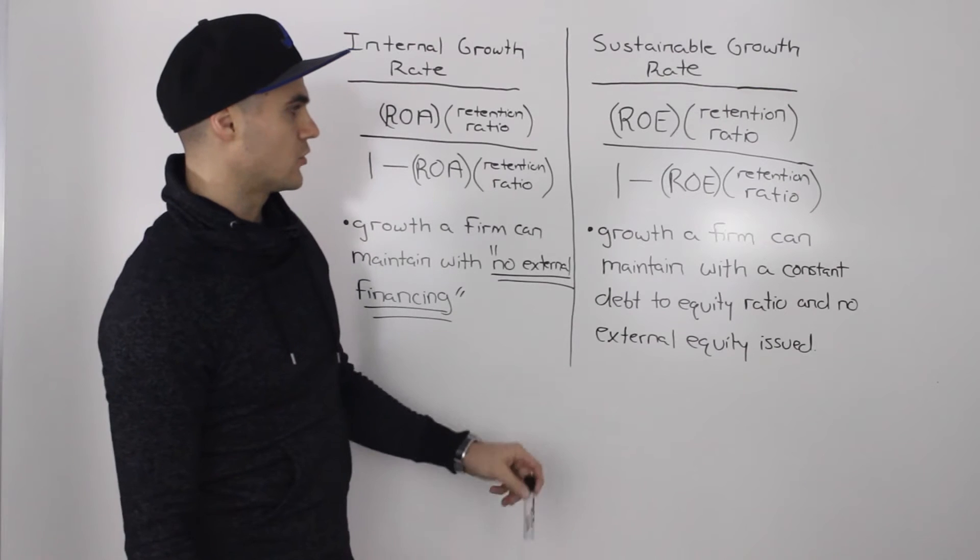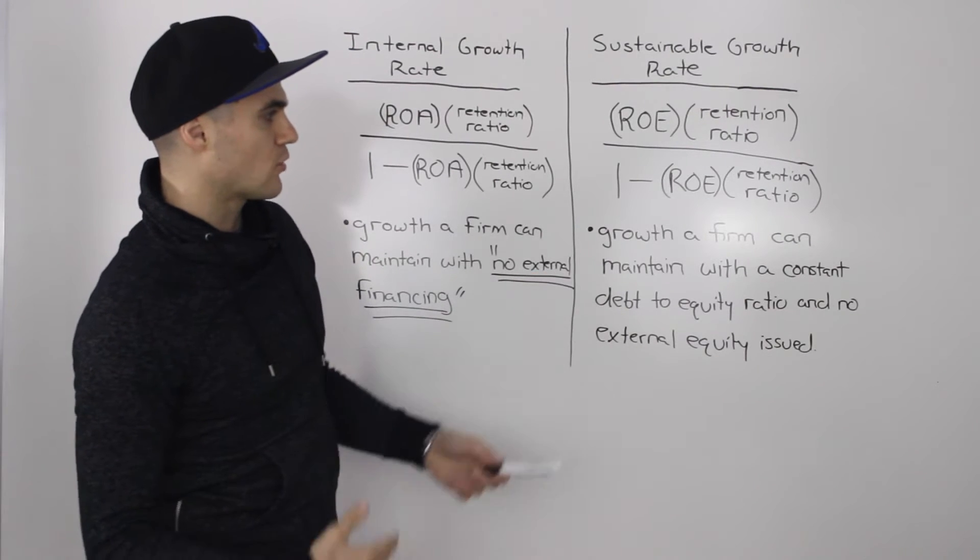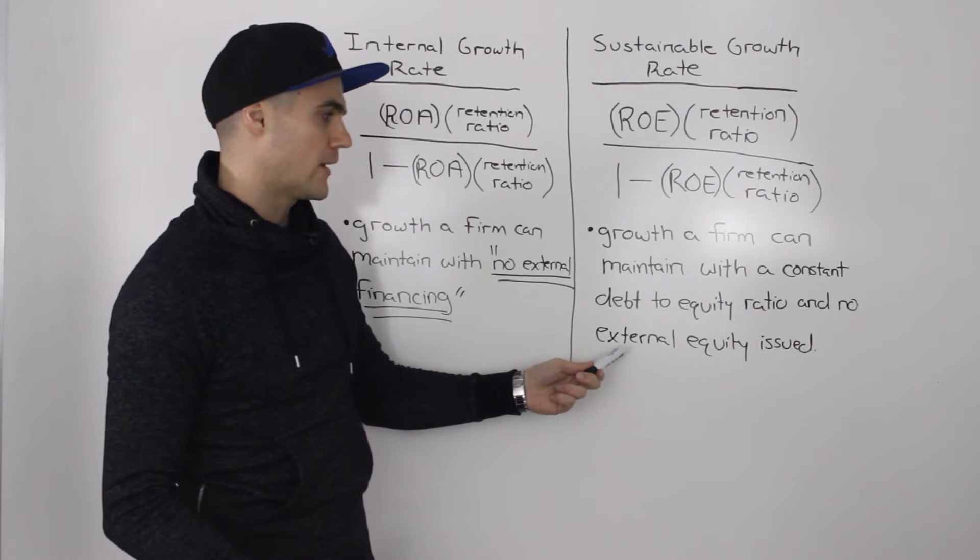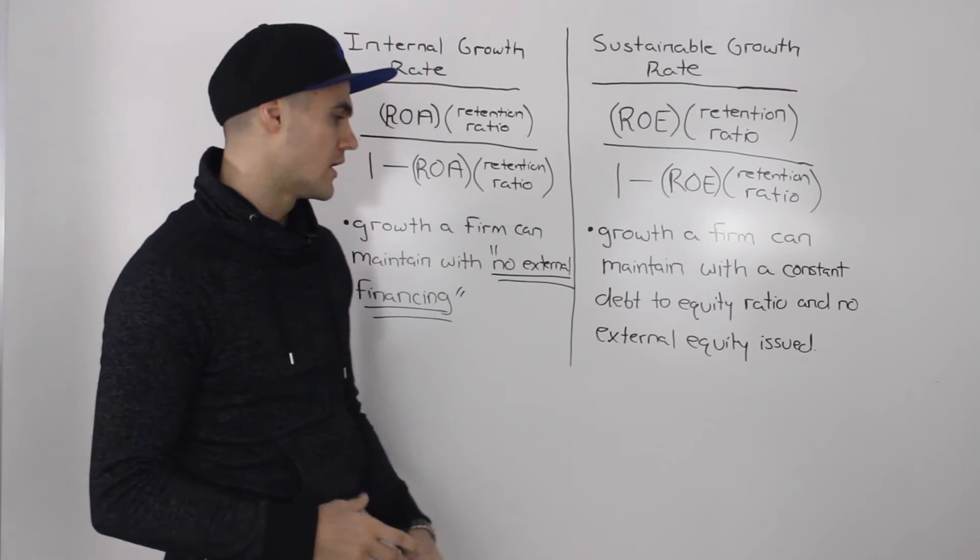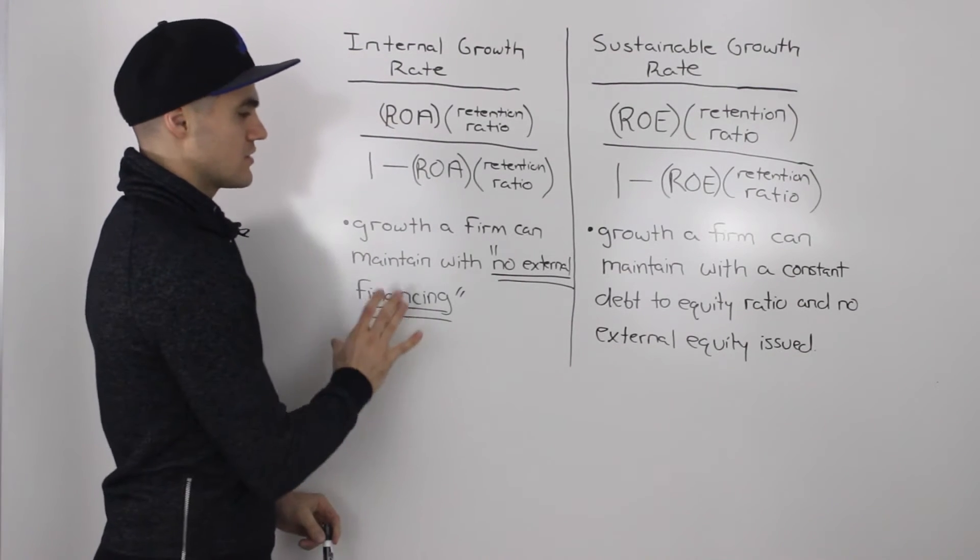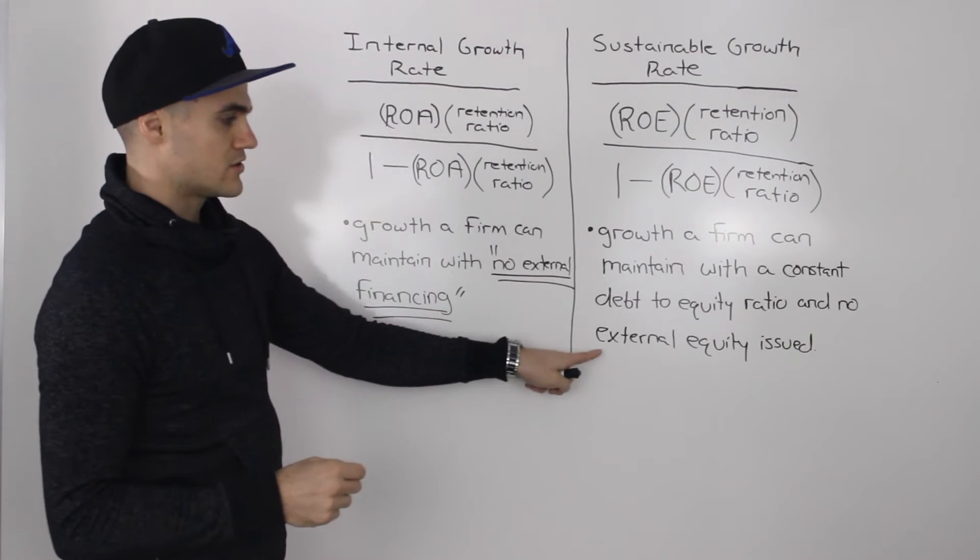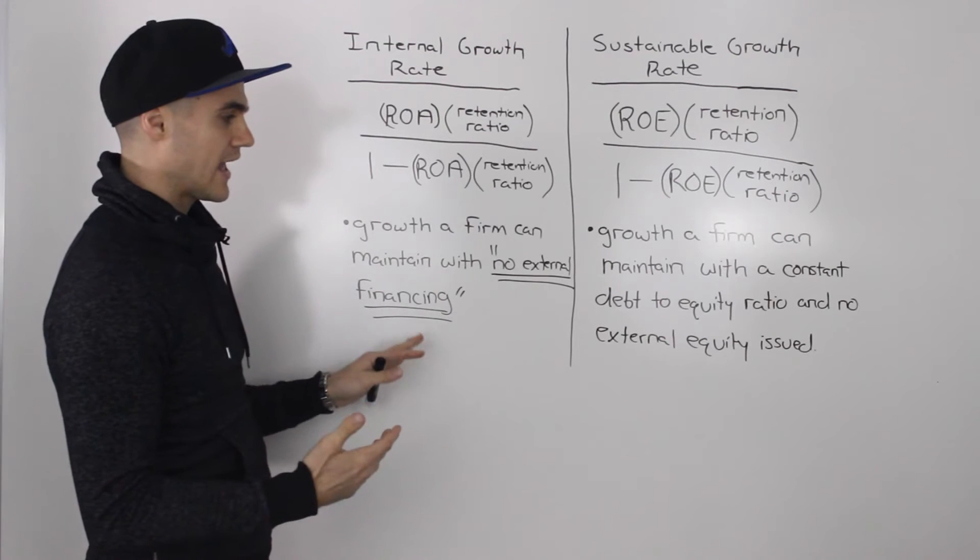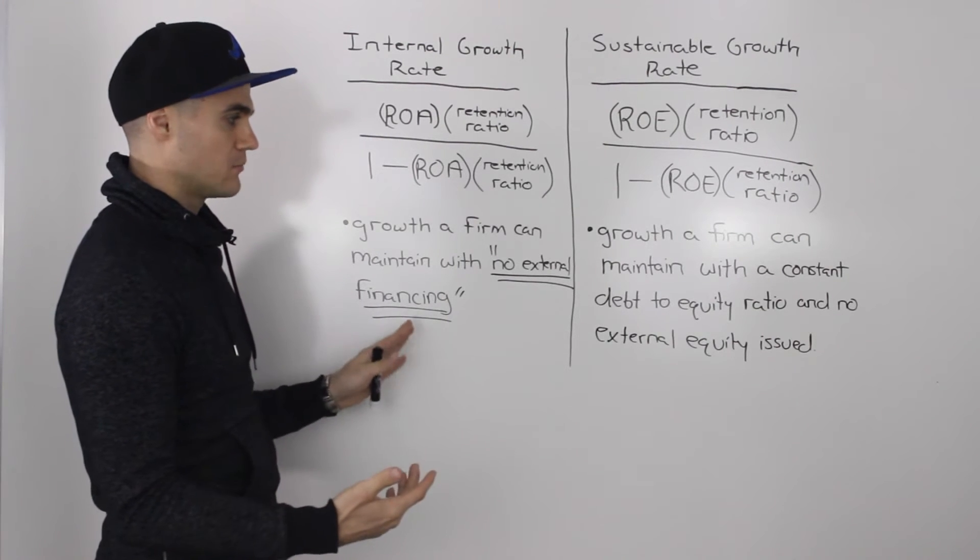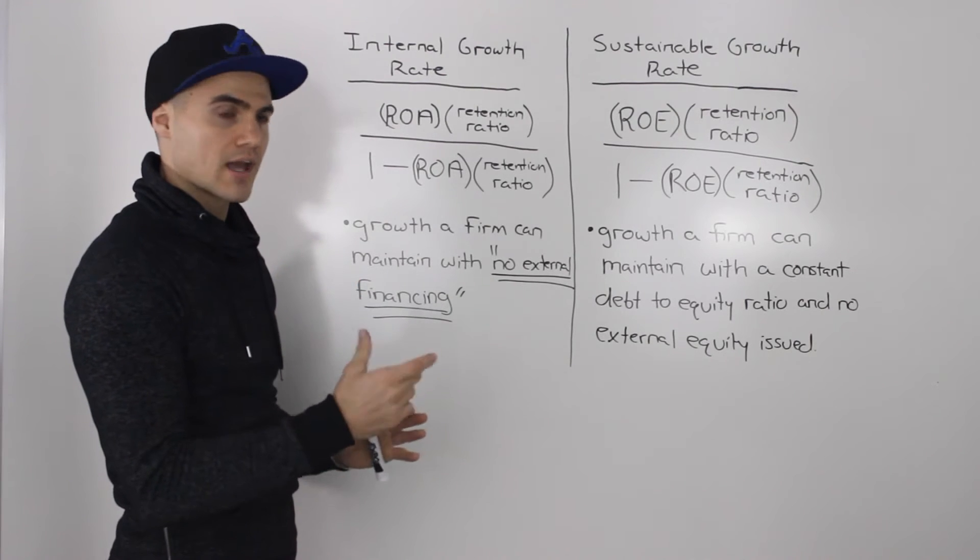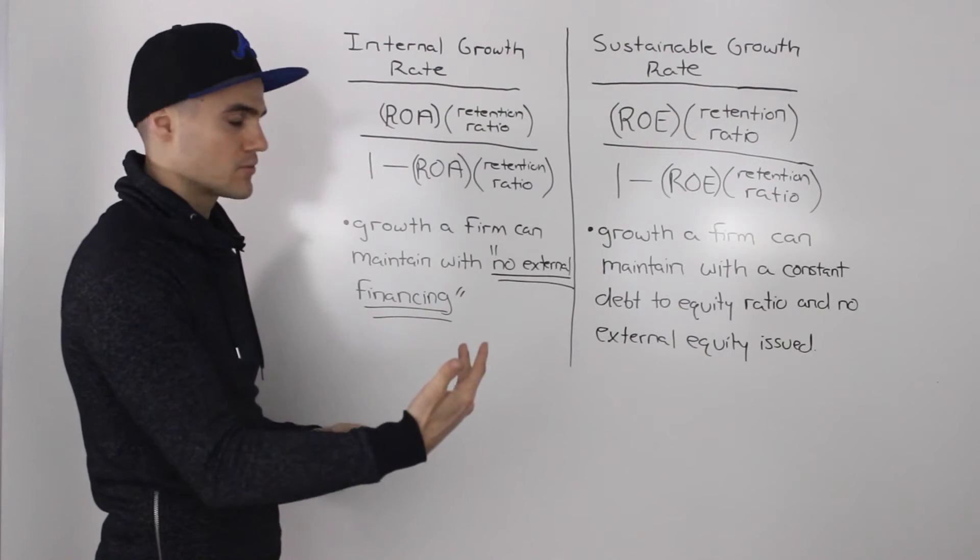Similarly, the sustainable growth rate definition is the growth a firm can maintain with a constant debt to equity ratio and no external equity issue. So very similar to the internal growth rate, but little differences. So in terms of the equity, it's the same. We can't take on any external equity in both the internal growth rate and the sustainable growth rate. The increase in equity has to come from that increase in retained earnings.